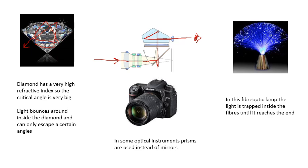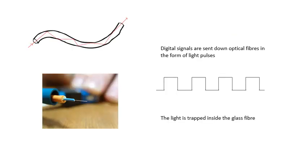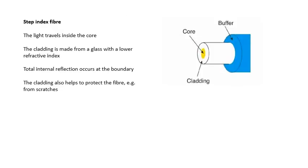And then fibre optic lamps. There's a groovy fibre optic lamp there. Light gets trapped inside the fibres. What use is that, apart from fibre optic lamps, is obviously to carry digital signals. So signals, digital signals, light pulses, bounce around inside the optical fibre. Digital signals are sent down optical fibres in the form of light pulses. The light is trapped inside the glass fibre. It's much, much cheaper than copper.